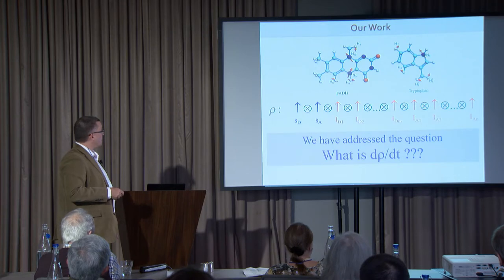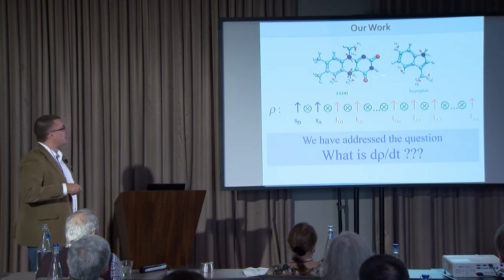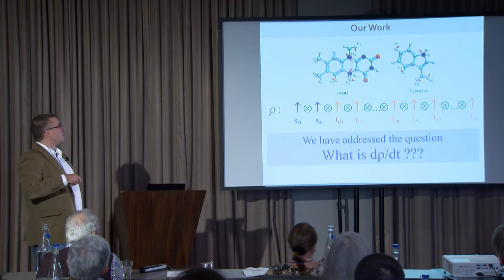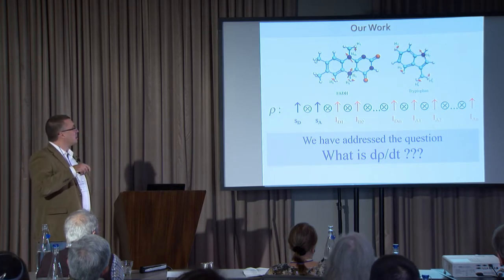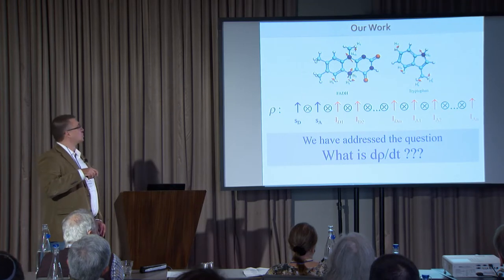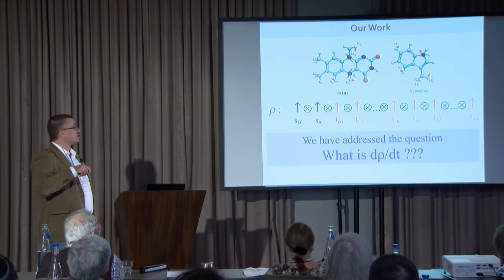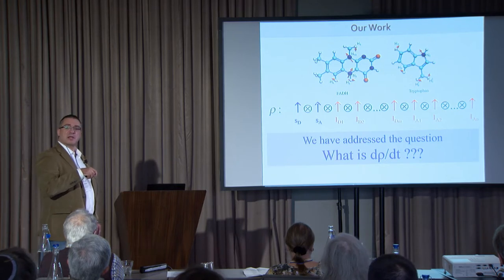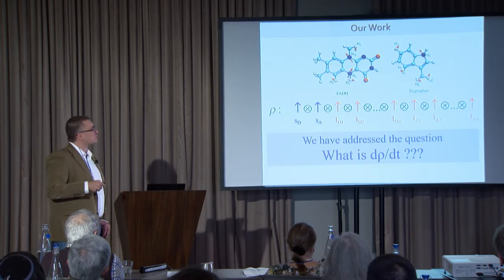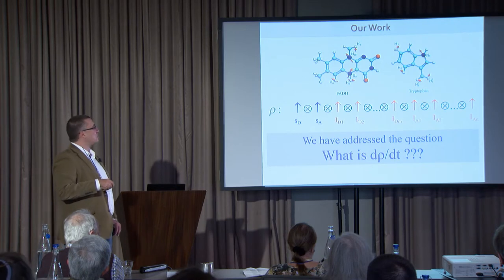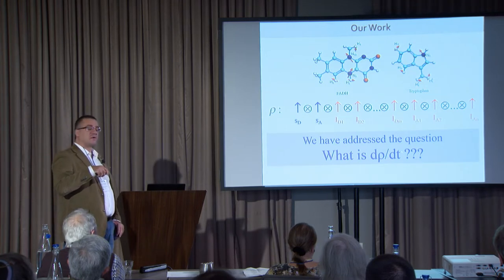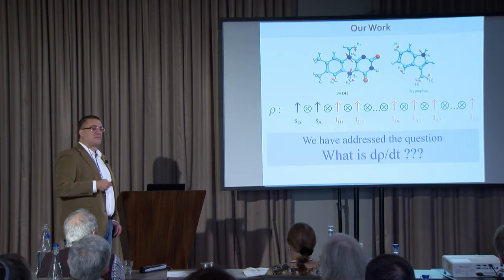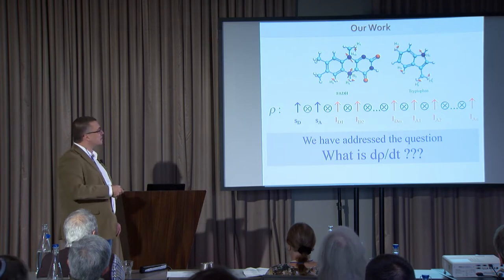A typical example of a radical pair is fundamentally about a multi-spin system consisting of two electron spins — one for each radical — and the number of nuclear spins contained in each one of those two molecules. This multi-spin system is in general described by a density matrix rho, as all quantum systems, and most of our work has centered on the question of how this density matrix evolves in time — what is the law of time evolution of the quantum state of this multi-spin system.